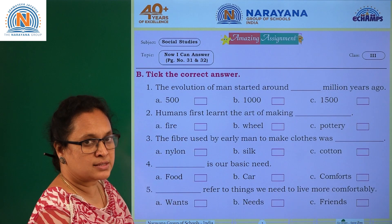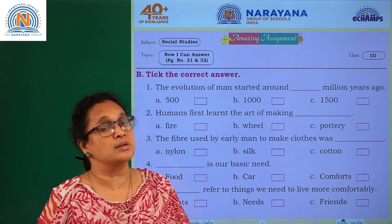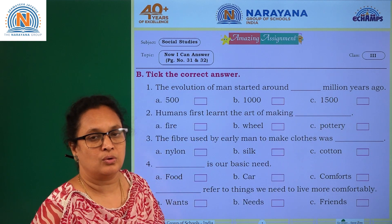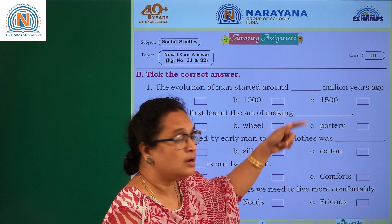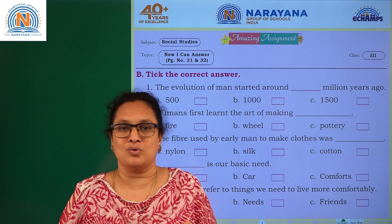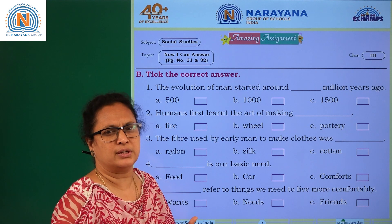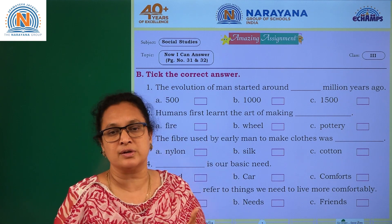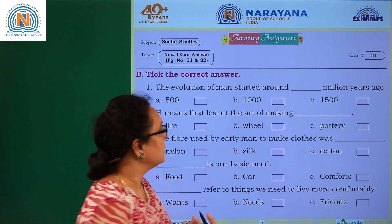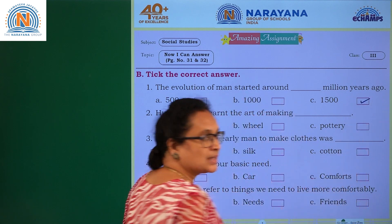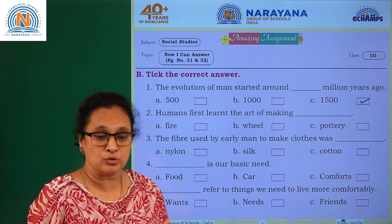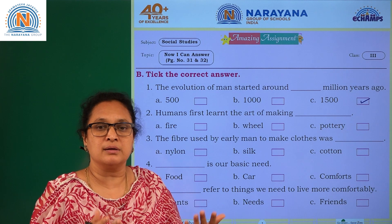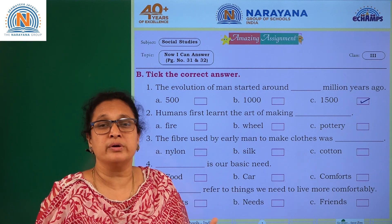Now let's look at the next section. The evolution of man started around dash million years ago. The answer is fifteen hundred million years ago — that is a long, long journey. We are now in the 21st century, and fifteen hundred million years ago is when early man started.